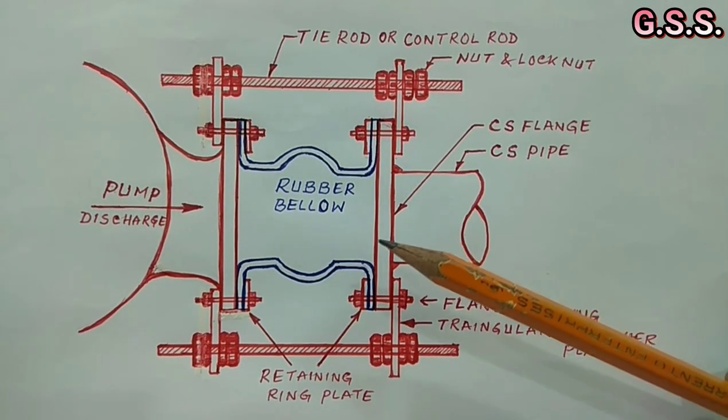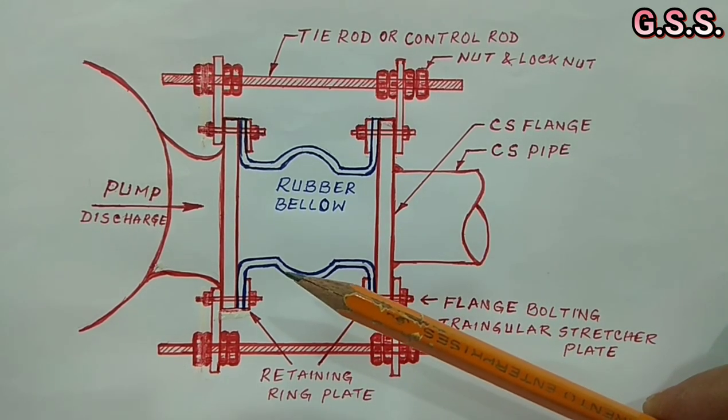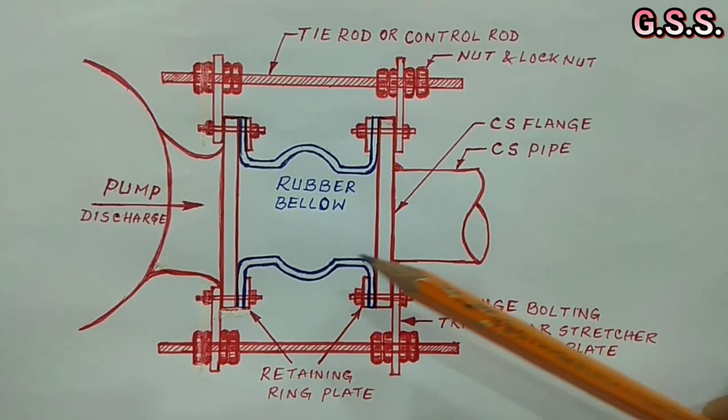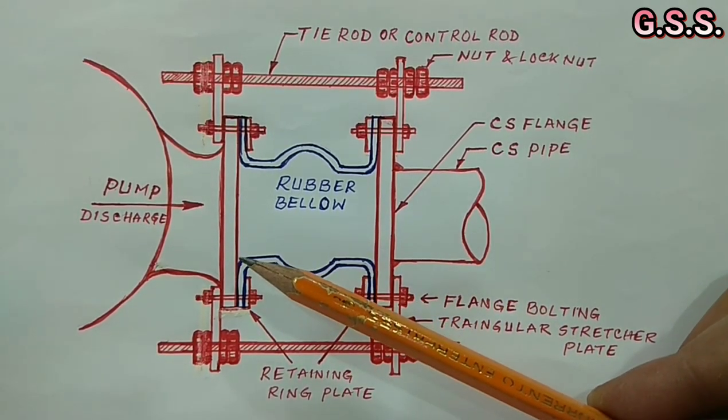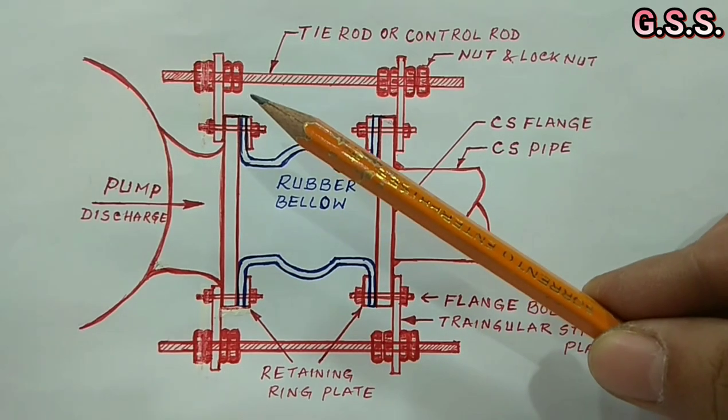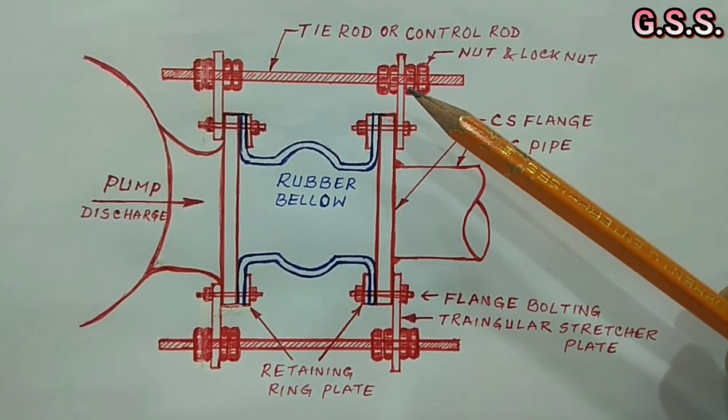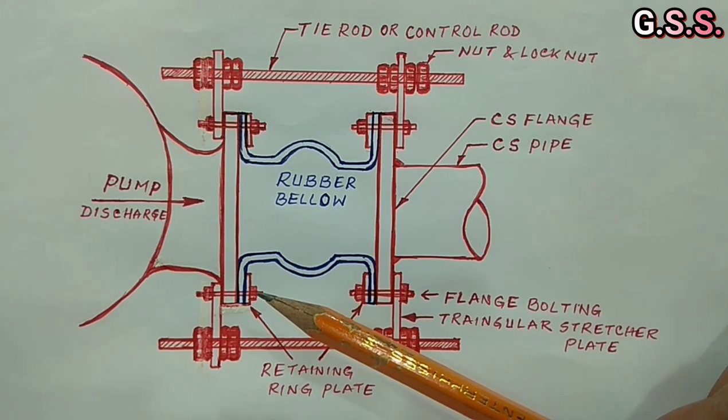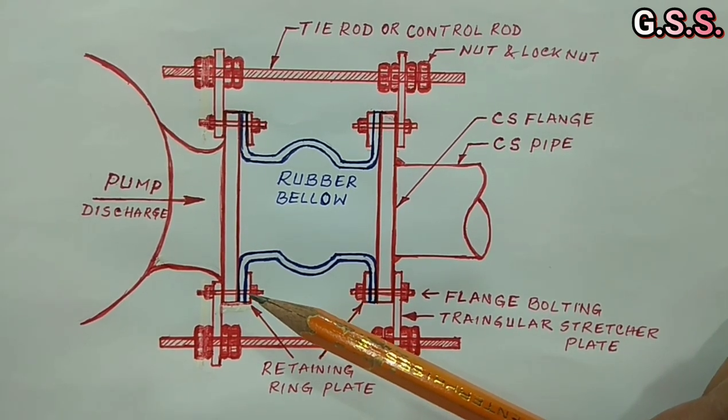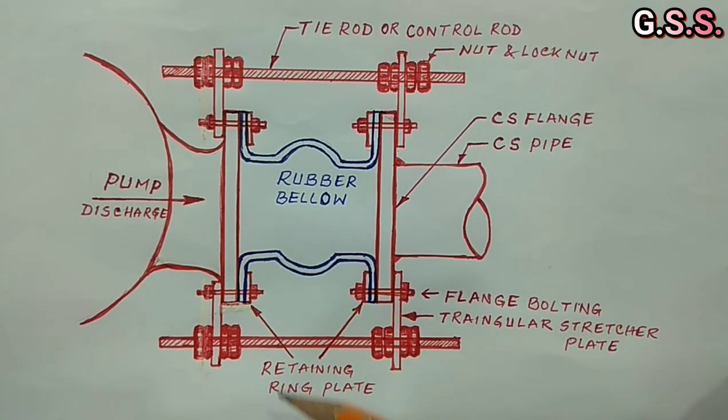First, rubber bellow is installed in between pipe flange and pump nozzle keeping tie rod nuts loose. Then pump nozzle side flange bolts are tightened with curved retaining ring plate having bolt holes.